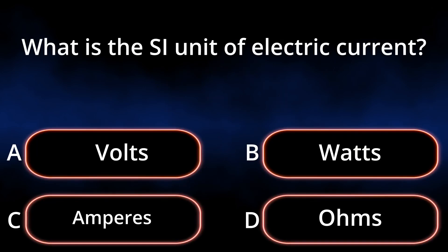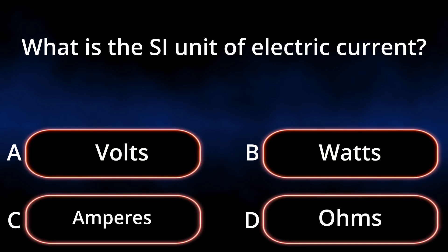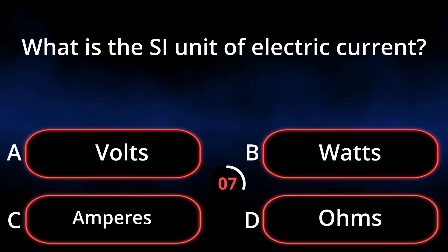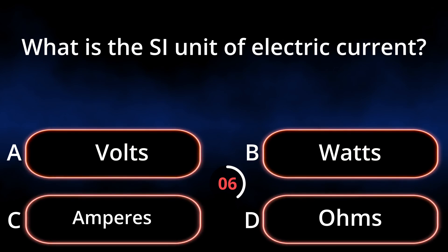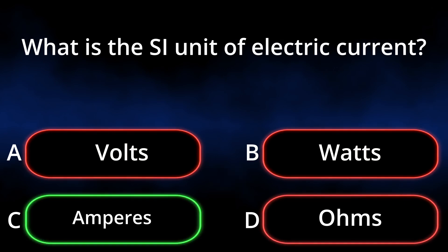What is the SI unit of electric current? A. Volts. B. Watts. C. Amperes. D. Ohms. Answer: Amperes.